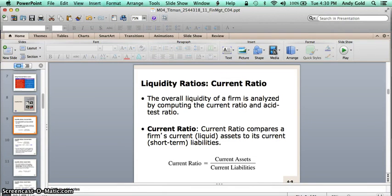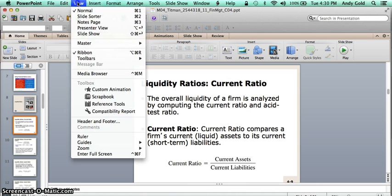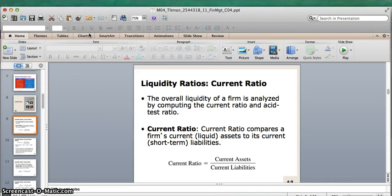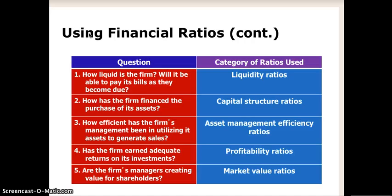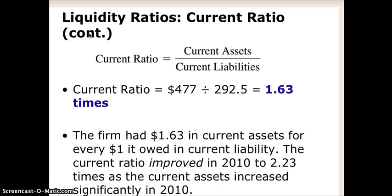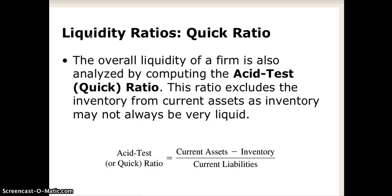Getting back to the PowerPoint slides, this is an example of a current ratio calculation for the fictitious company in the textbook. There's also something called the quick ratio or acid test ratio, which is like the current ratio except it takes inventory out of the picture from current assets and then divides that over current liabilities.